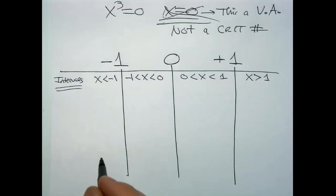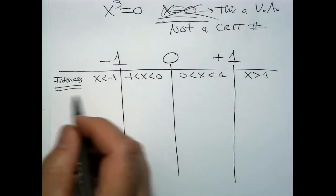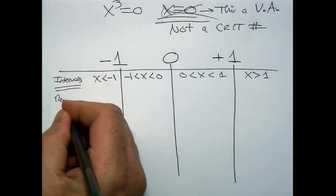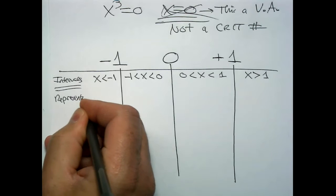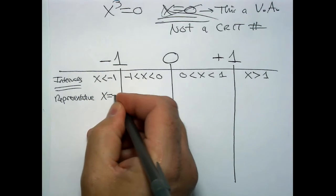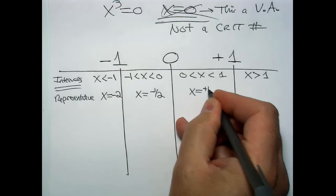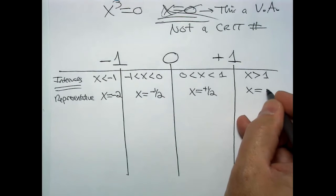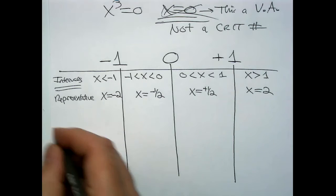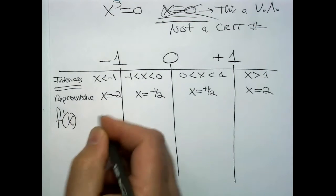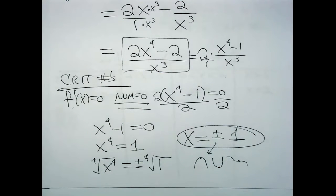Those are four intervals. Pick a representative test value for each: negative 2, negative one-half, positive one-half, and 2. Now sample f prime at those particular x-values using the formula f prime = (2x⁴ − 2) / x³.